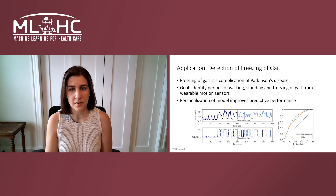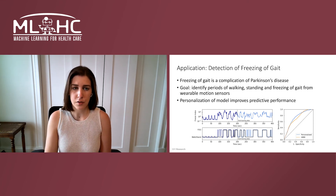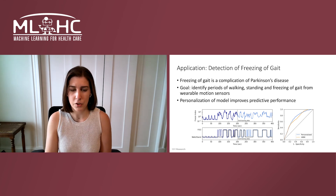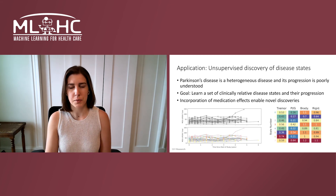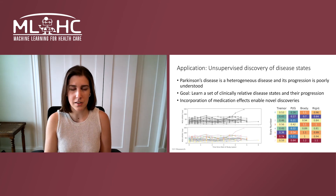We apply this framework to two applications in Parkinson's disease. The first is a freezing of gait problem, which has known ground truth values. The second is an unsupervised discovery of disease states. I'd be happy to talk about either of these applications or our algorithm in more detail if you stop by our poster.